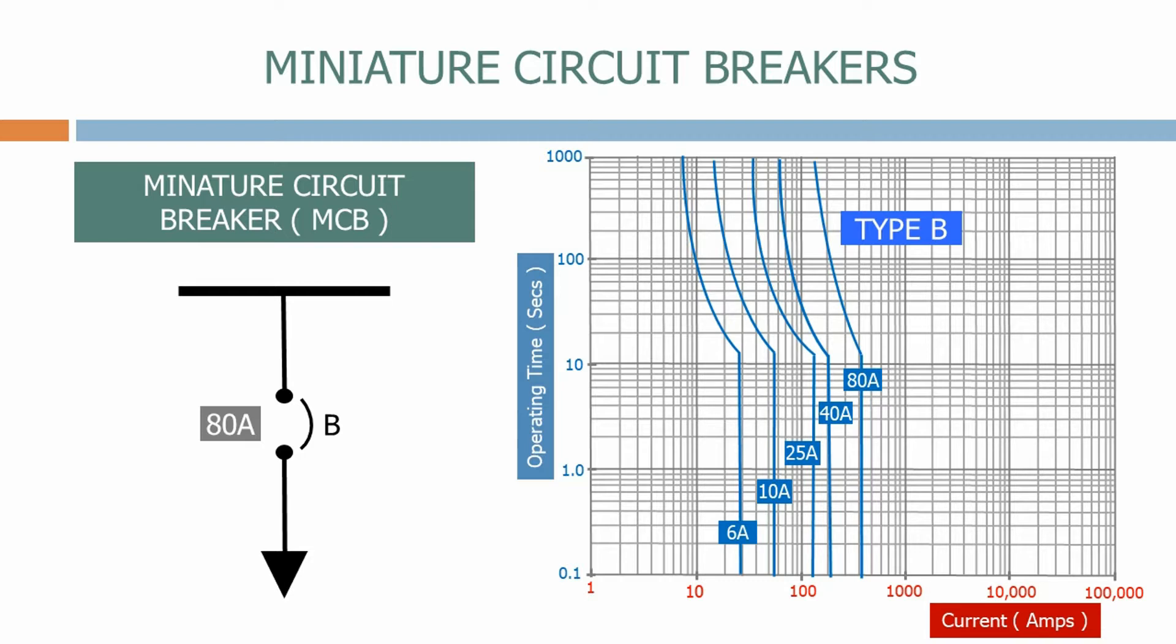What do we mean by type B MCB? Well as well as having different current ratings for MCBs we also have several different families. This is required so we can provide discrimination between MCBs and to supply different loads that may have different operating characteristics.